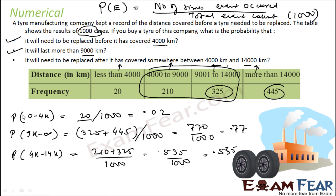For example, in this question we have taken the 9 to 14 range twice, and that is why if you add this you get more than 1. But if you find probability for 0 to 4k, 4 to 9k, 9 to 14k, and more than 14k and add them, then you will get 1 in this case also.